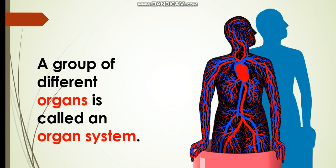A group of different organs is called an organ system. This is the circulatory system.